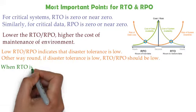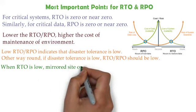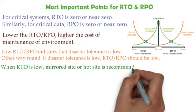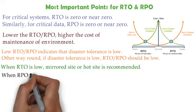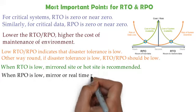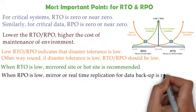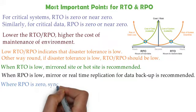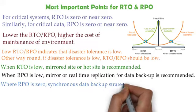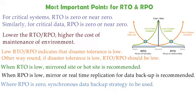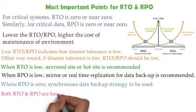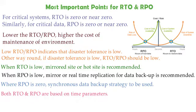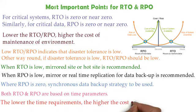Here are some important recommendations for RTO and RPO. The first recommendation is when RTO is low, a mirror site or work site is recommended. The second recommendation is when RPO is low, mirror or real-time replication for data backup is required. The third recommendation is when RTO is zero, a synchronous data backup strategy is to be used. For both RTO and RPO, they are based on time parameters. The lower the time requirements, the higher the cost of recovery strategy.